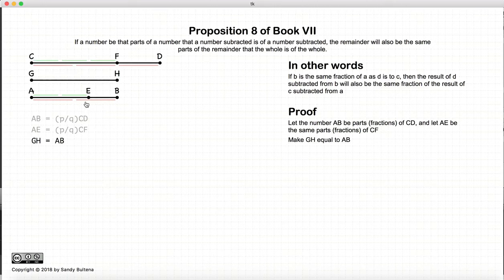Alright, so the first thing we're going to do in our proof is create a line, GH, that is equal to AB. Now AB is some fraction of CD. AE is some fraction of CF. Since GH equals AB, then GH is also the same fraction of CD that AE is of CF.